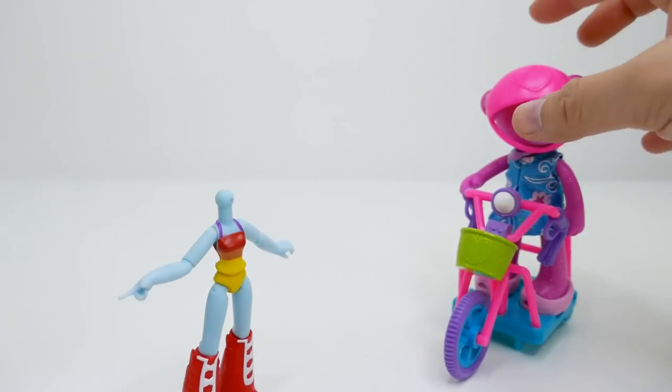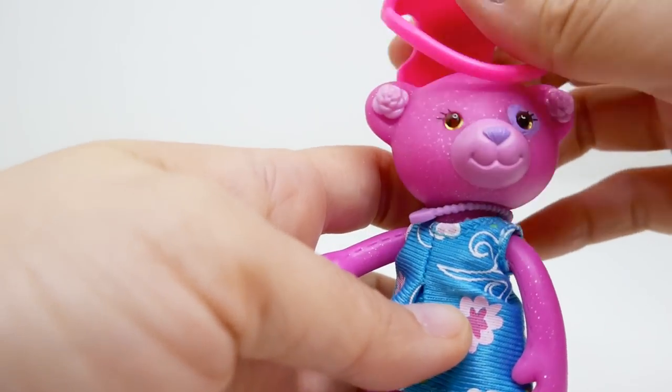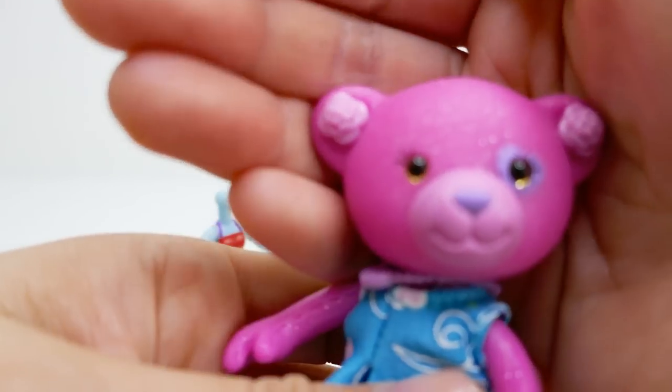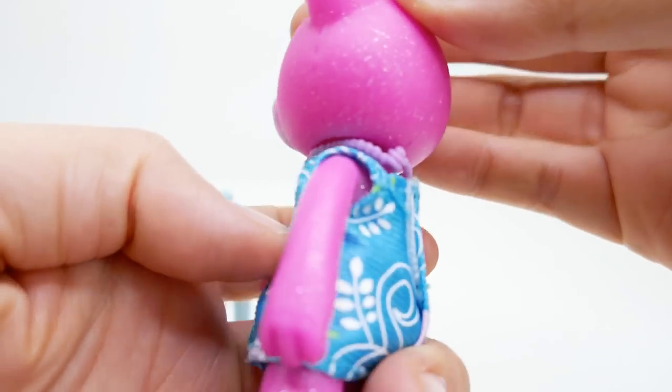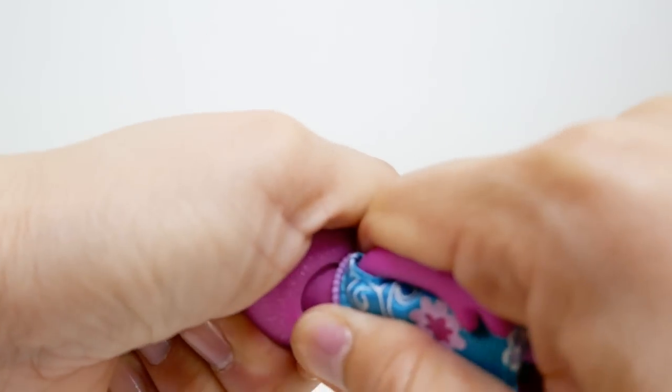I picked this Rainbow Dash because of her boots. She has these laces over here, so we're gonna use her body for the custom. And for the head, we're gonna be using our Build-A-Bear head. This head is just perfect, don't you think?